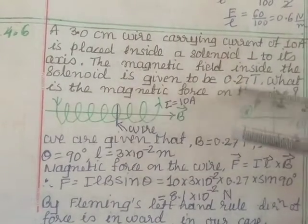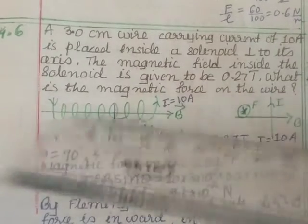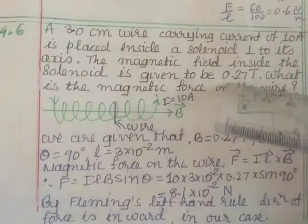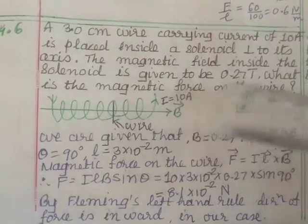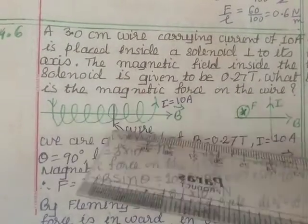...is given to be 0.27 Tesla. The value of magnetic field inside the solenoid is given to you: 0.27 Tesla, value of B. What is the magnetic force on the wire? Now wire is perpendicular, so angle between the wire and this is 90 degrees.